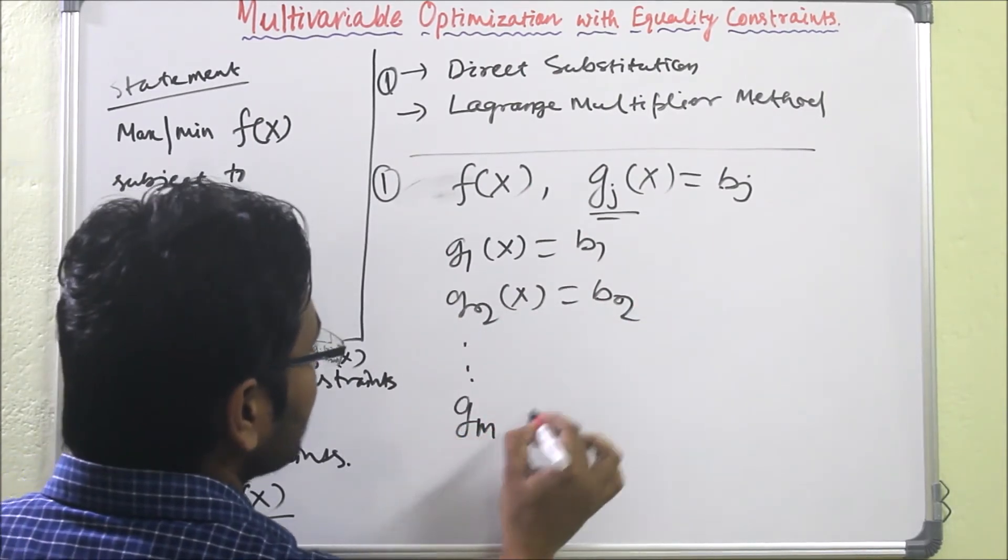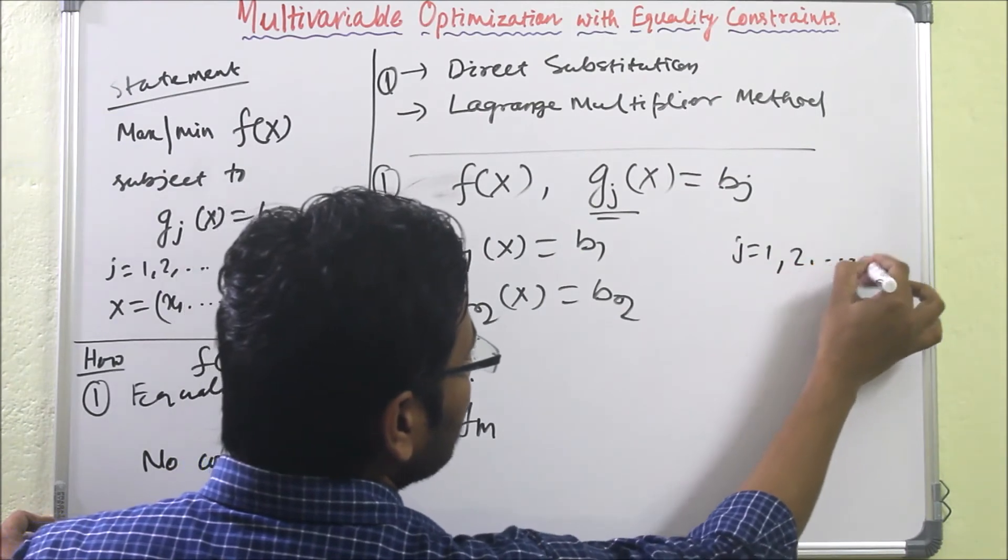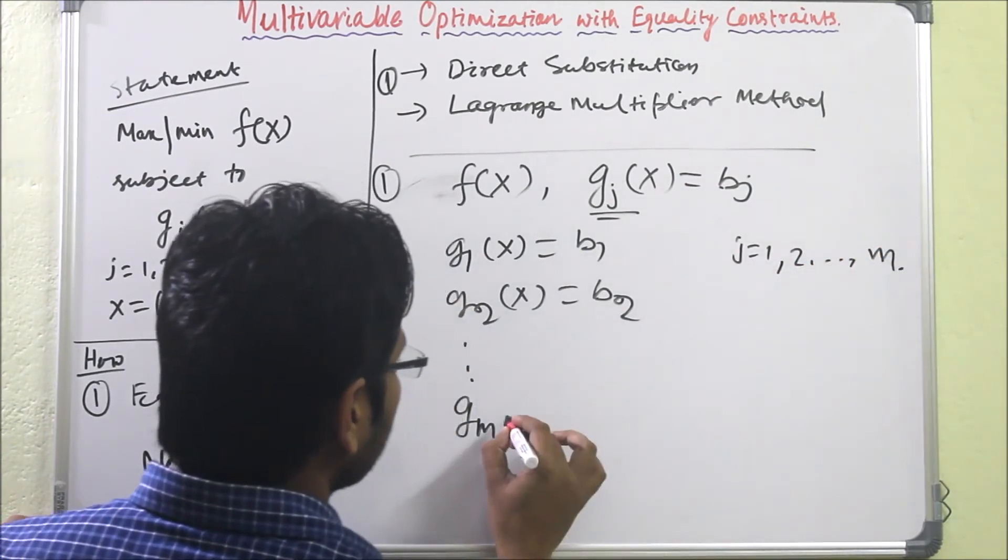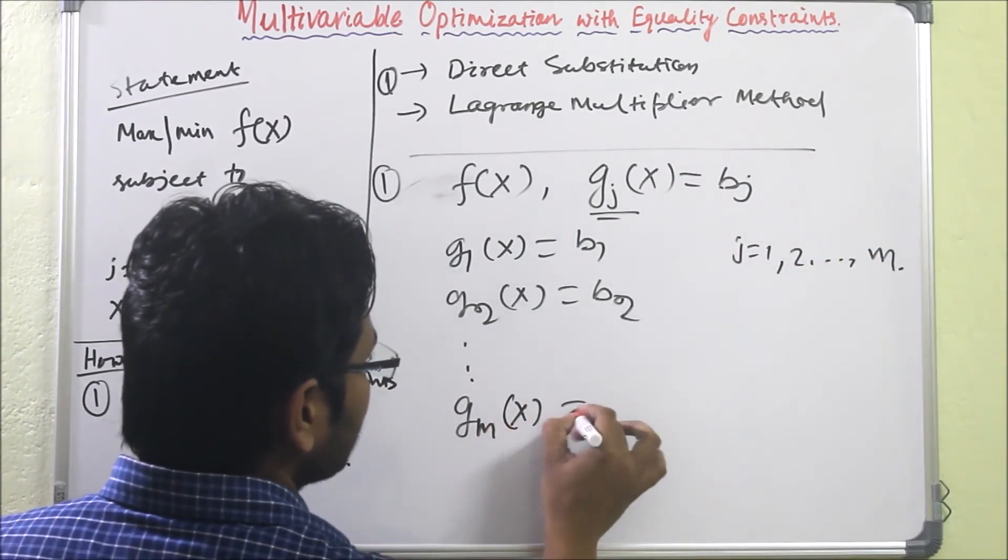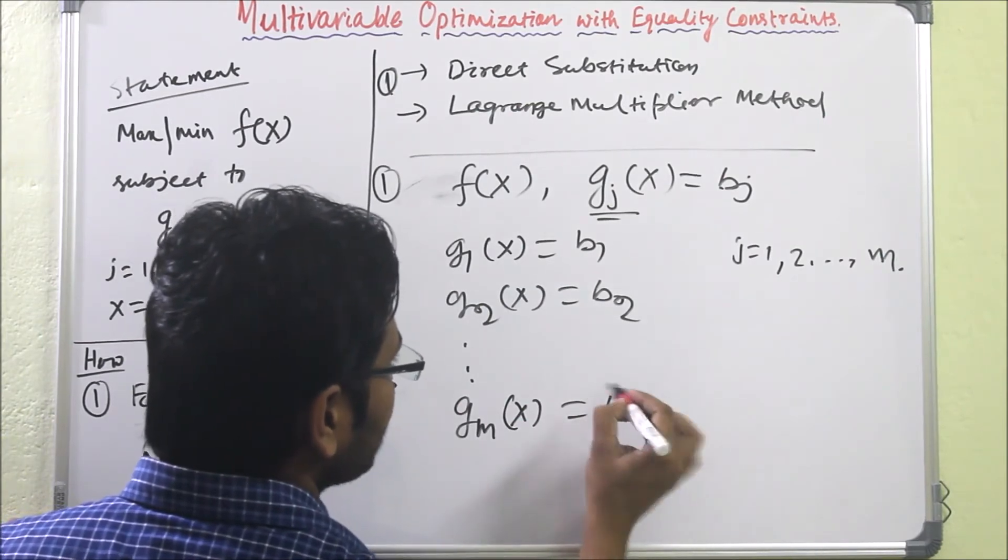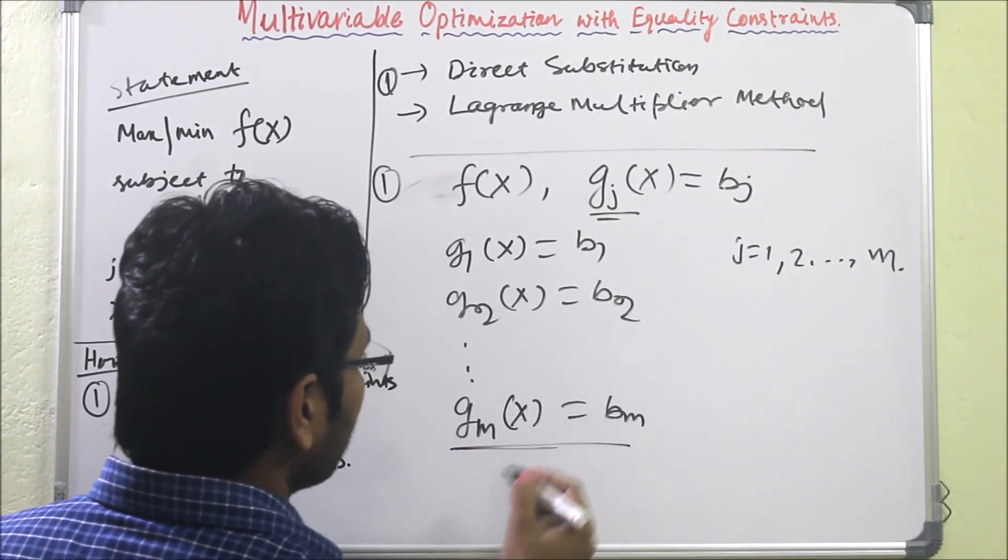So there are m equations. If I write j = 1, 2, 3, up to m, we have m equations. Now what will happen?